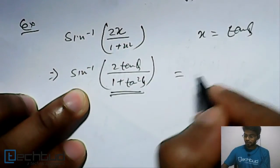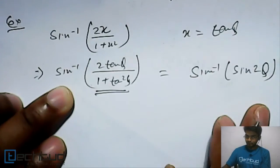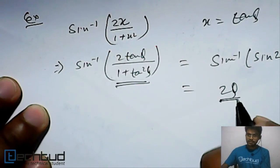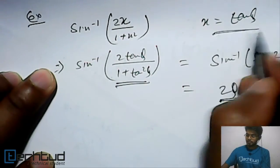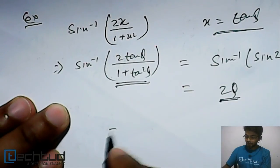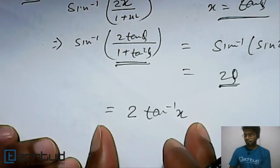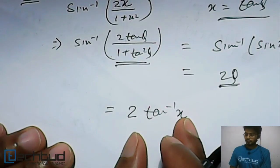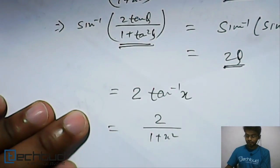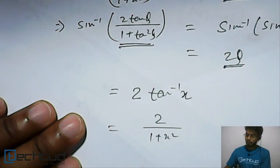So the entire expression becomes sin⁻¹(sin2θ) = 2θ. Now we replace θ using x = tanθ, so θ = tan⁻¹(x), and the expression becomes 2·tan⁻¹(x). Differentiating with respect to x: the derivative of tan⁻¹(x) is 1/(1+x²), so the final answer is 2/(1+x²).